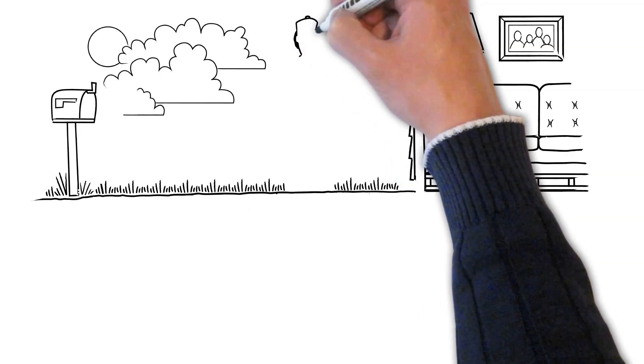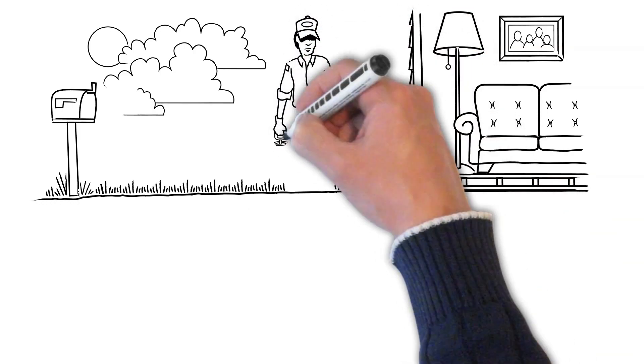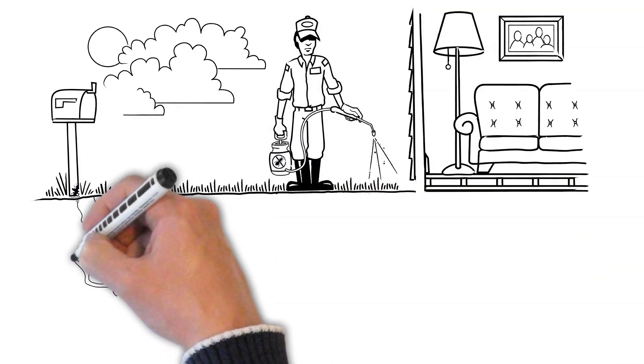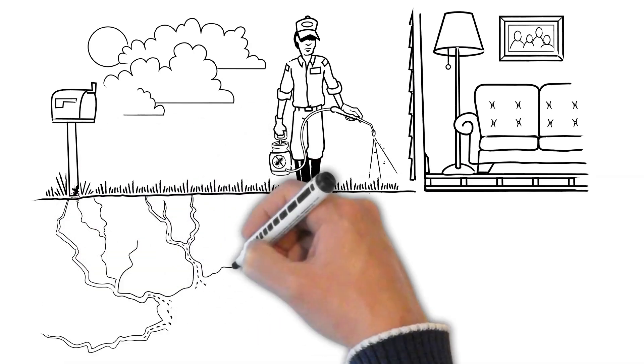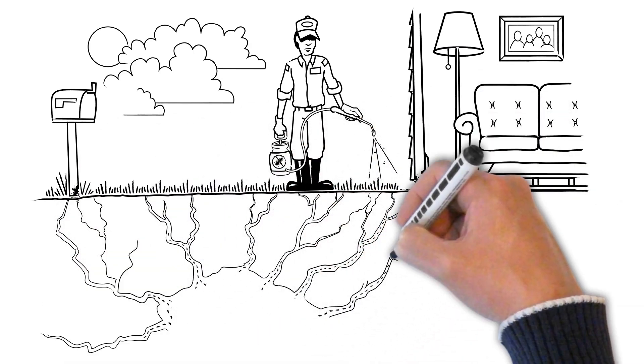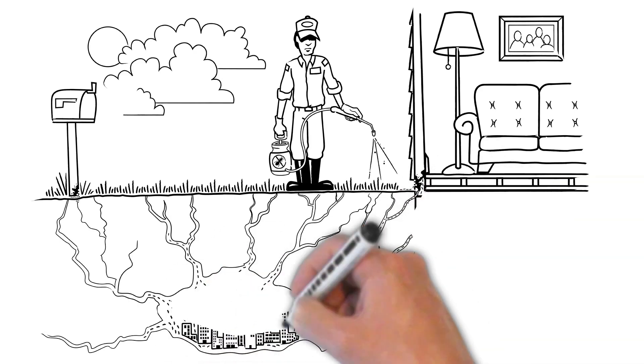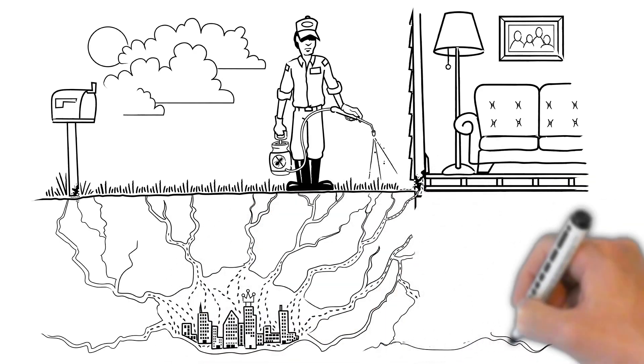Liquid treatments, whether used outside or inside, must come into direct contact with termites to kill them or to be effective as a barrier. The odds are liquid treatments are only going to kill a small fraction of the thousands of food foraging termites.